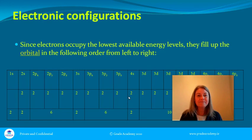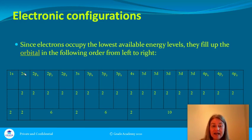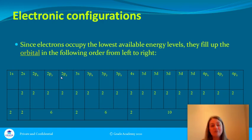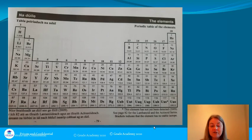The electrons are going to occupy the lowest available energy level. The first energy level is called one, the second is called two. You have the 1s and then the 2s because they're both spherical, then three 2p sublevels: 2px, 2py, and 2pz. You can see two in the s and six in total with the three p's. It's much easier to see that you fill from left to right — two, then two and six, then two, six, eight, and ten.